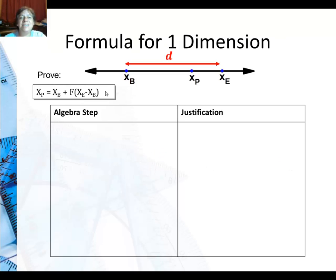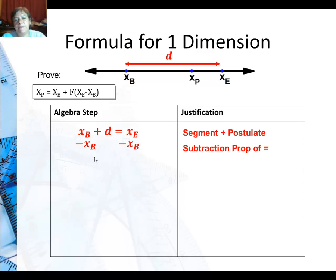So now I'm going to, this is the formula we're going to come up with. We're going to say, okay, this point equals whatever this beginning value is plus the fraction of the distance times that difference. So the first thing I do is I'm going to prove this, and I'm going to use segment addition postulate. So I'm going to say x of b plus the distance equals x of e. That's like what we did before. Then I'm going to subtract x of b from both sides, using the subtraction property of equality. And I get d equals x of e minus x of b.